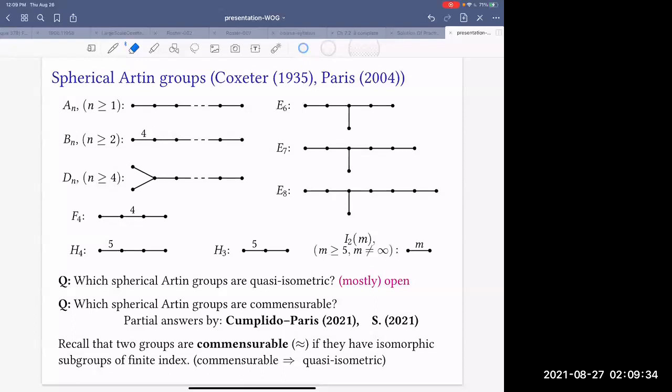Recall that two groups are commensurable if they have subgroups of finite index which are abstractly isomorphic. They not necessarily have the same index. It can be index m, index n in another group, but they are isomorphic taken separately. Obviously, if groups are commensurable, then they are quasi-isometric. But there are examples of quasi-isometric groups which are not commensurable.